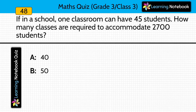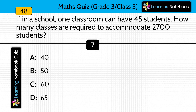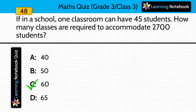If in a school one classroom can have 45 students, how many classes are required to accommodate 2,700 students? Answer is option C, 60. 60 classrooms are required for 2,700 students. We divided 2,700 by 45 and got our answer as 60.